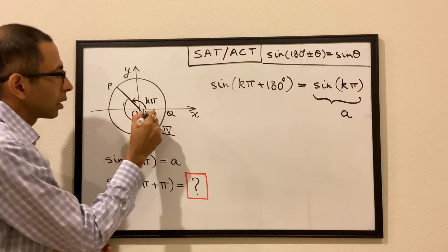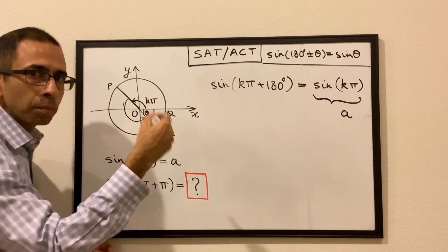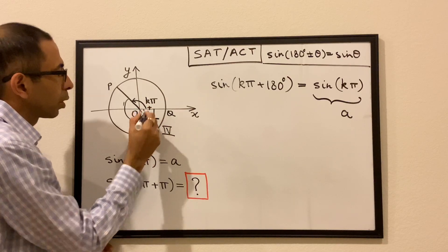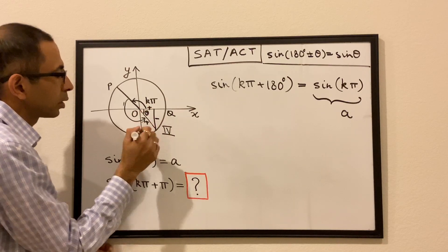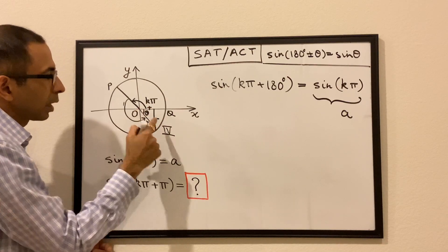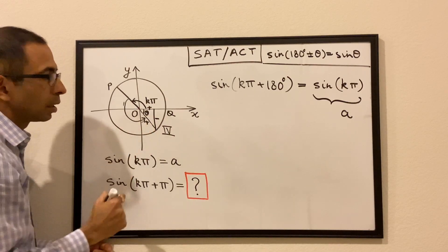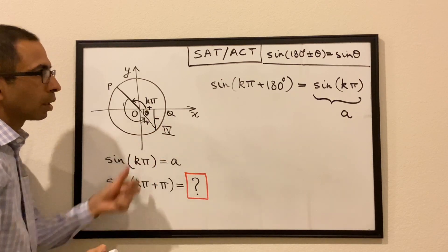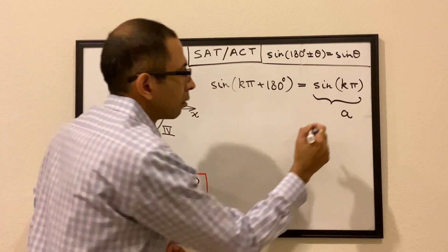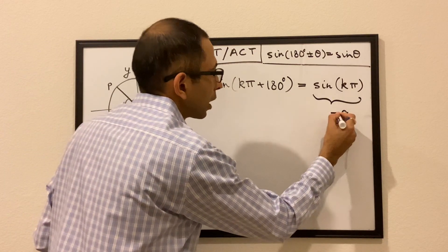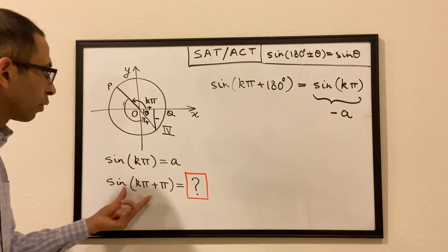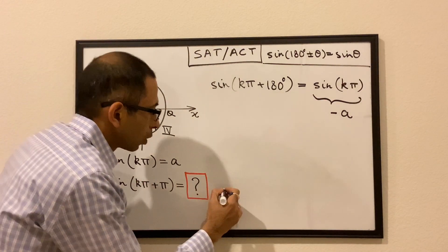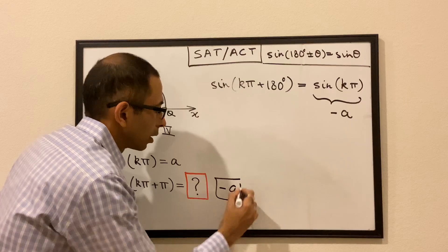So we are talking about the fourth quadrant. In the fourth quadrant, the value of sine is negative — perpendicular over hypotenuse — so sine in the fourth quadrant is negative. Hence we put a negative sign. So sine of kπ + π is equal to negative a.